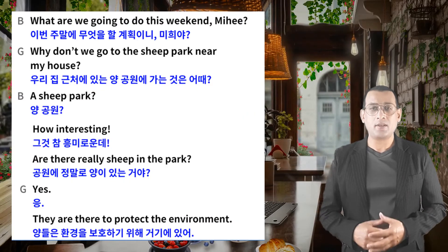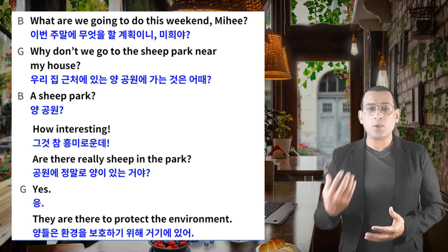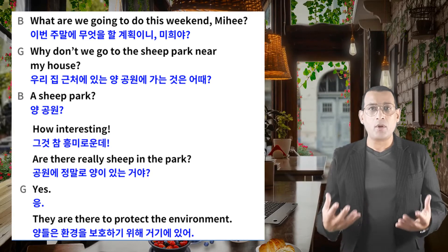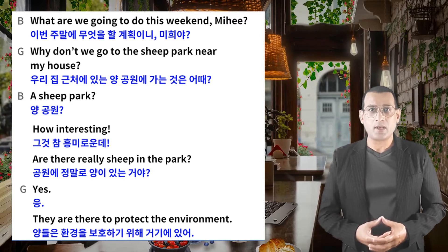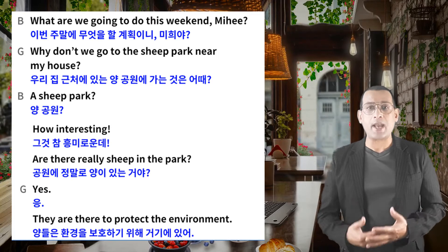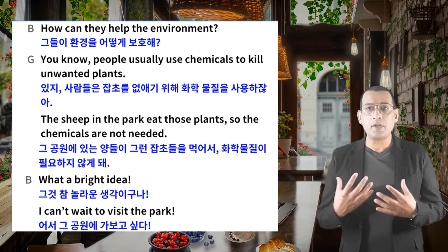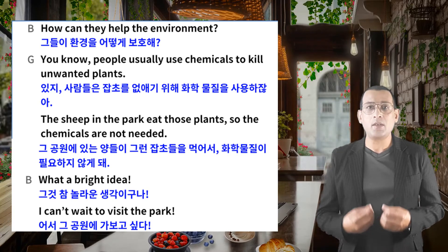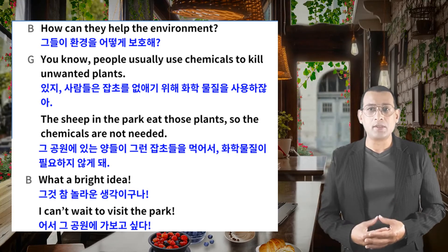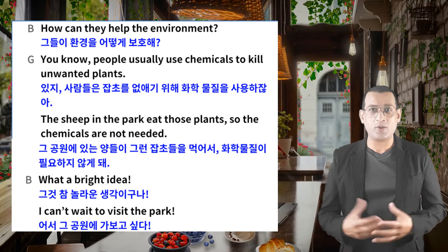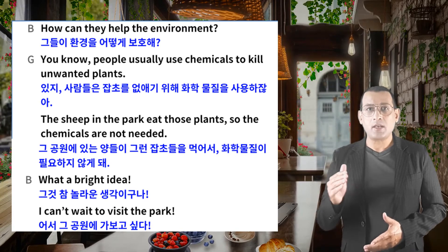So let's move to the dialogue. The boy says: what are we going to do this weekend, Mihi? And she says: why don't we go to the sheep park near my house? The boy was surprised: a sheep park? How interesting. Are there really sheep in the park? The girl says: yes, they are there to protect the environment. The boy asks: how can they help the environment? She says: you know, people usually use chemicals to kill unwanted plants. The sheep in the park eat those plants, so the chemicals are not needed. The boy says: what a bright idea. And the pattern dialogue is: I can't wait to visit the park.